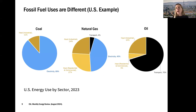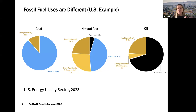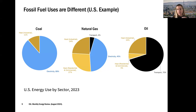Our fossil fuels differ in what we use them for. Coal is a solid fossil fuel — very stable — and is pretty much just used for electricity, with a small amount for industrial heat, particularly in steelmaking and coking. Coal is really used for the industrial and electricity sectors primarily.